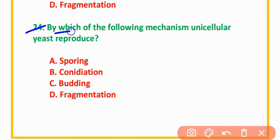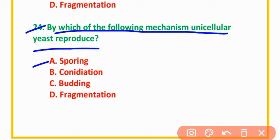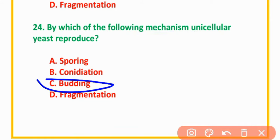MCQ Number 24: Which of the following mechanisms does a unicellular fungus use to reproduce? Options: sporing, conidiation, budding, or fragmentation. The correct option is option C: Budding.